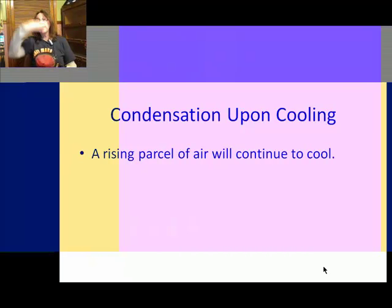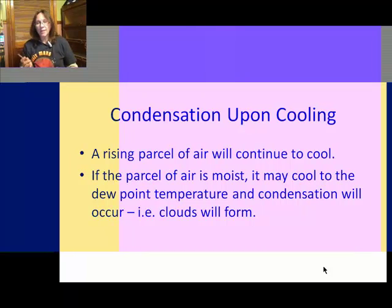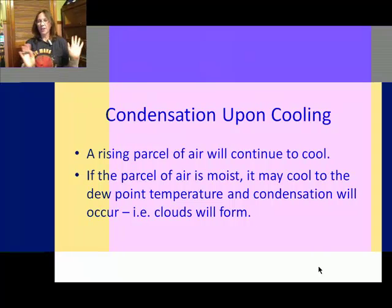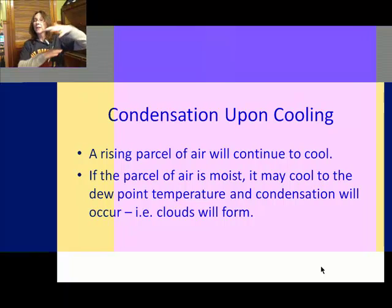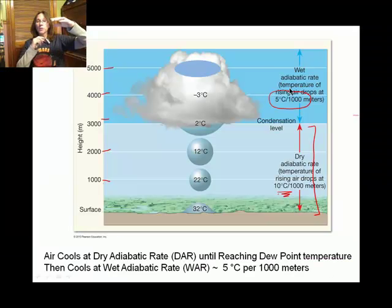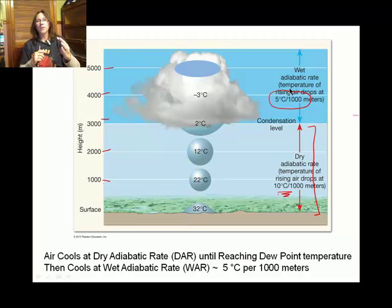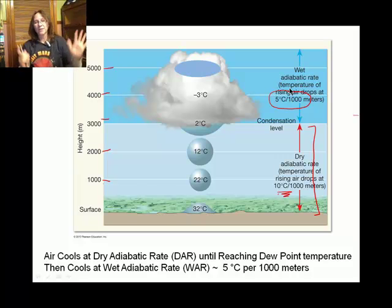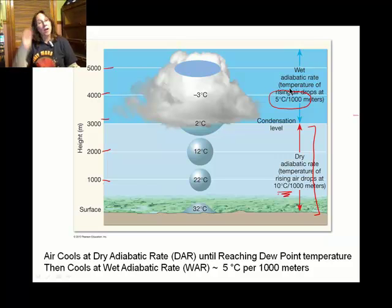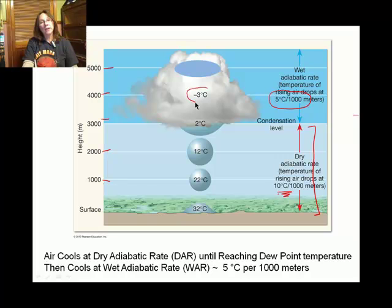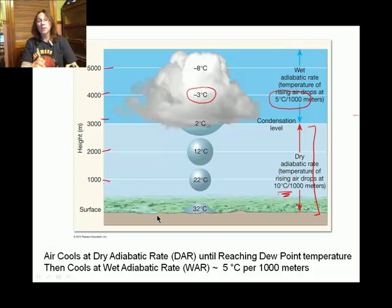As it rises, you'll see it cooling at 5 degrees Celsius for every 1,000 meters — the wet adiabatic rate. Going from positive to negative Celsius, you have to concentrate. From 3,000 to 4,000 meters, condensation is occurring, so it cools at 5 degrees per 1,000 meters: 2 minus 5 gives negative 3. Then from 4,000 to 5,000 meters: negative 3 minus 5 gives negative 8 degrees Celsius. So that's an example of applying the wet adiabatic rate.